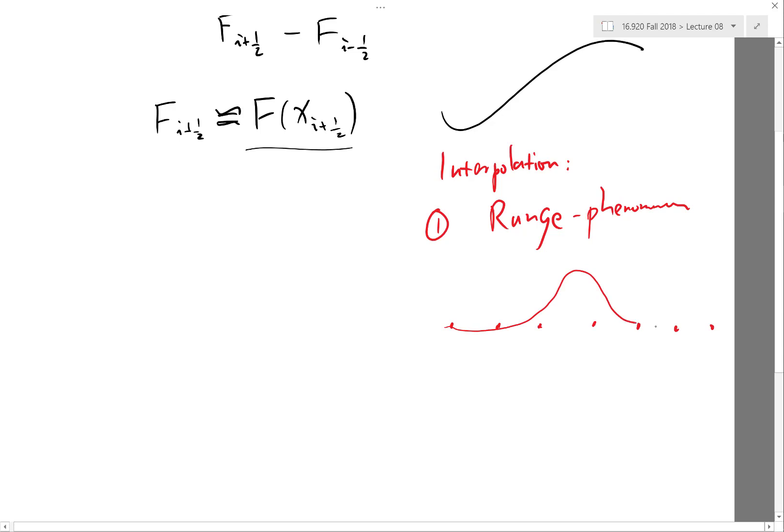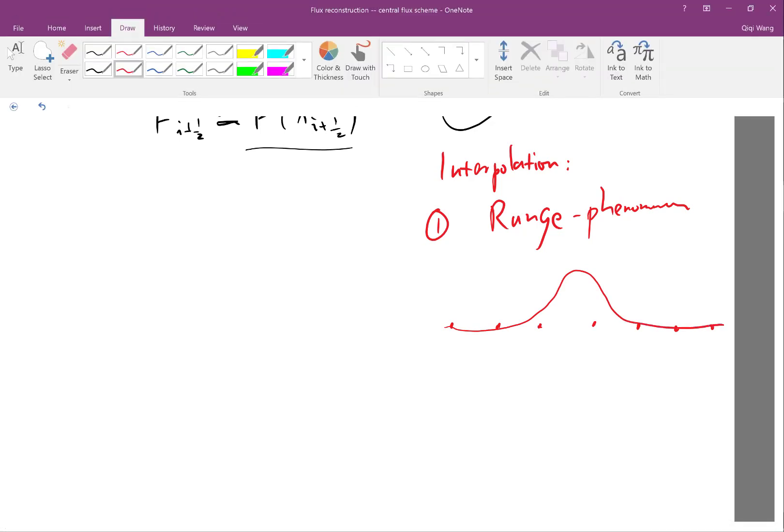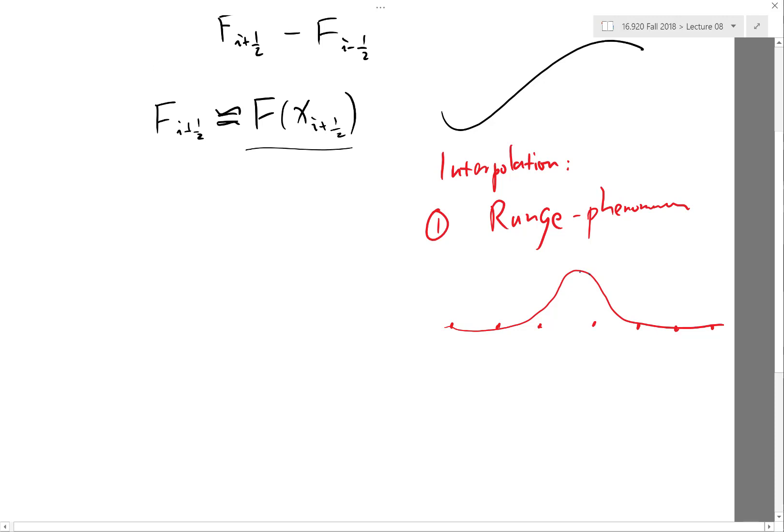Runge phenomenon is you use a too-high-order interpolation on the not so particularly arranged grids. So if you try to interpolate this function over uniform spacing, you can easily get something like a wild oscillation around the two ends. So that's the Runge phenomenon.